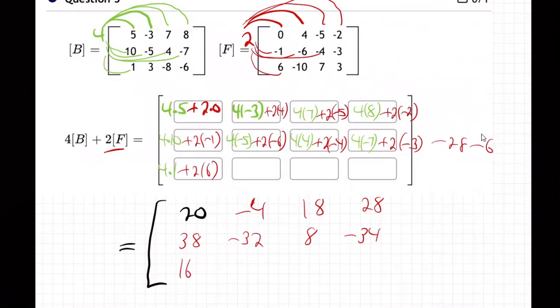And then four times three and two times minus 10. 12 minus 20 is minus eight.